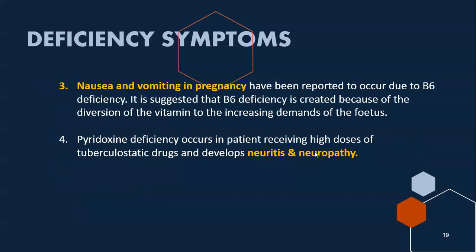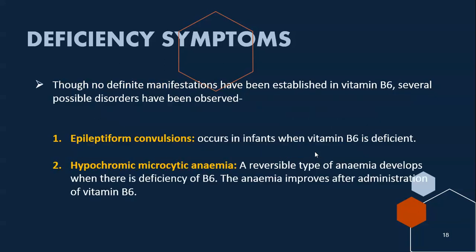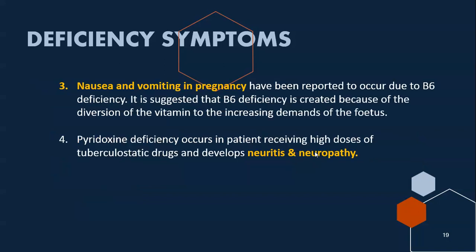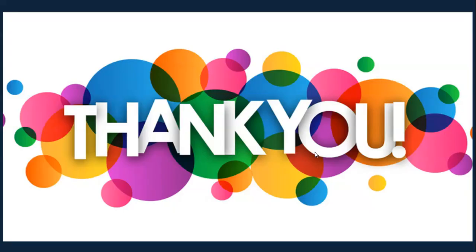Nausea and vomiting in pregnancy have been reported due to Vitamin B6 deficiency, suggested to occur because of diversion of the vitamin to meet the increasing demands of the fetus. Additionally, pyridoxine deficiency occurs in patients receiving high doses of tuberculostatic drugs, leading to neuritis and neuropathy. Thus, the four groups of deficiency symptoms are: epileptiform convulsions in infants, hypochromic microcytic anemia, nausea and vomiting in pregnancy, and neuritis/neuropathy from tuberculostatic drugs.